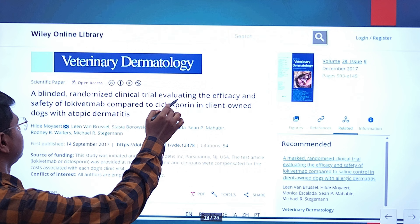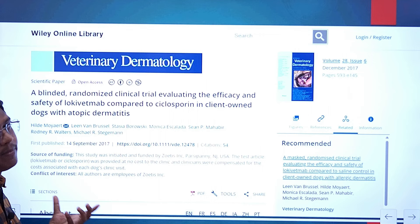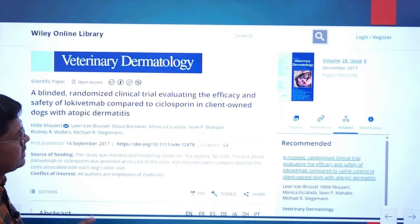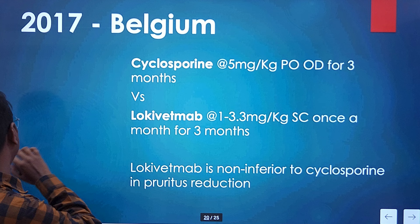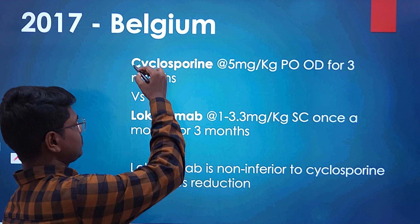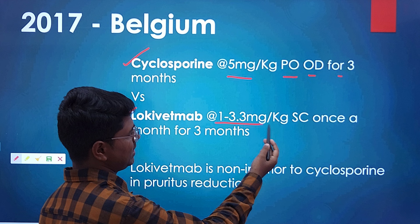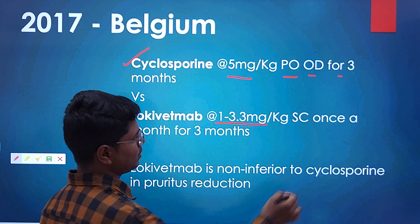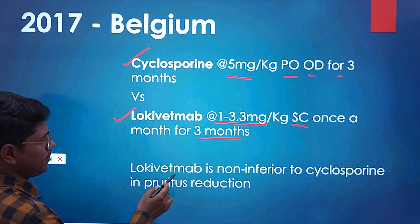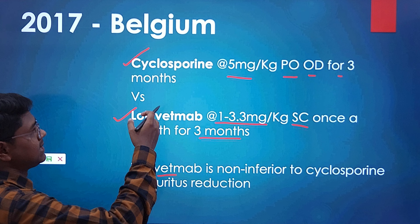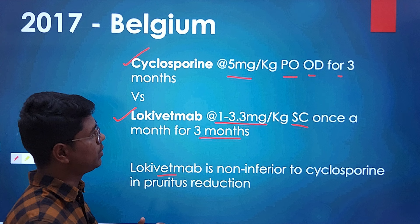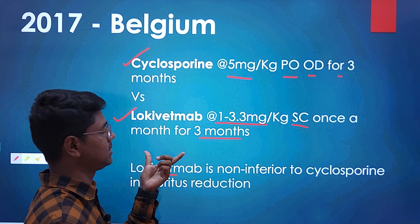Another article is a blinded randomized clinical trial evaluating the efficacy and safety of lokivetmab — a new monoclonal antibody — compared to cyclosporine in client-owned dogs with atopic dermatitis, published in 2017 and conducted in Belgium. Cyclosporine was given at 5 mg per kg body weight orally once daily for 3 months; lokivetmab at 1 to 3.3 mg per kg subcutaneously once a month for 3 months. They found that lokivetmab is not inferior to cyclosporine in pruritus reduction, and patient compliance is much better since it is given only once a month rather than orally daily.